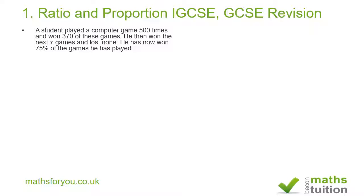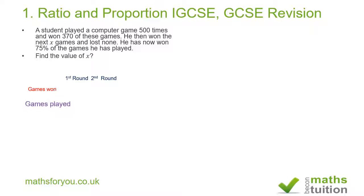He has now won 75% of all the games he has played. The question asks us to find the value of X. There are five parts to this question; we'll look at the first four now. The first part covers the first round of games played, then a second round, with the number of games won and the number of games played.